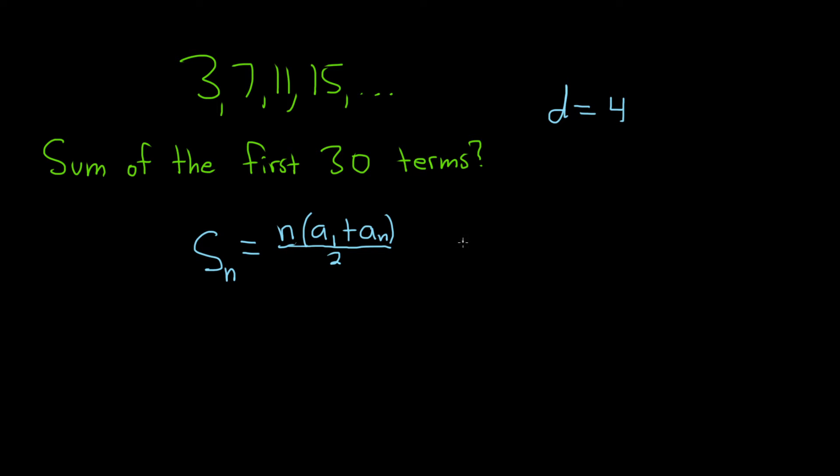So in our example, n is equal to 30 because it's the first 30 terms. And a sub 1 is the first term. So in this case, this would be the number 3.